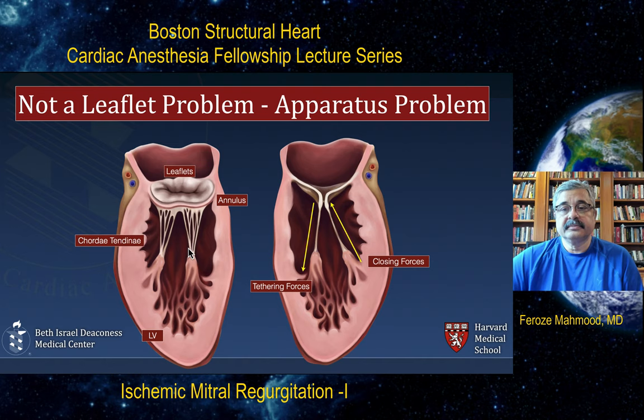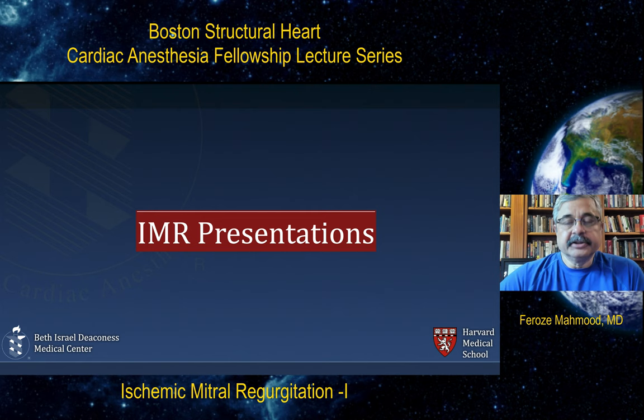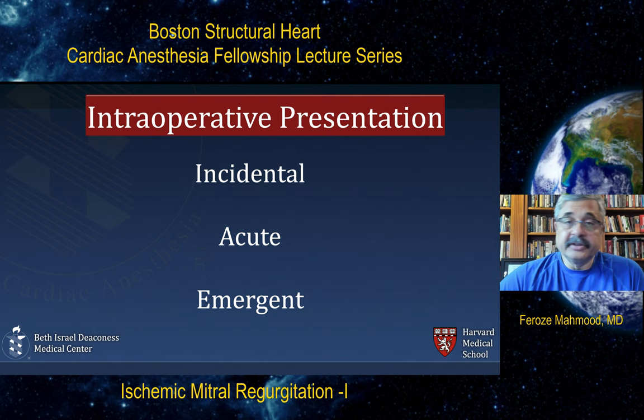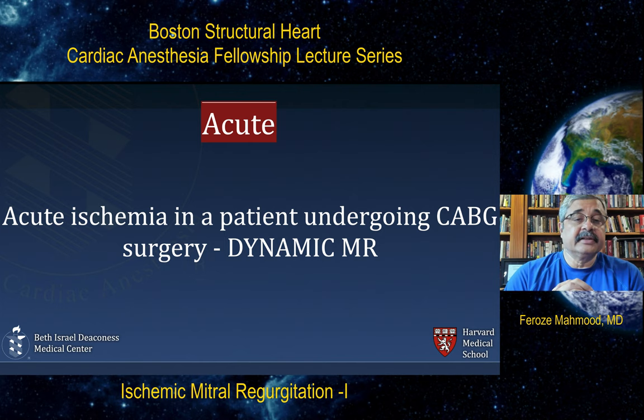Now let's go over the clinical presentations of ischemic mitral regurgitation. There are three broad categories in which we can encounter ischemic mitral regurgitation in the operating room: as an incidental finding, as an acute finding, or as an emergent presentation. Acute presentation is acute ischemia in a patient undergoing coronary artery bypass graft surgery — it's a dynamic MR which is responsive to ischemic therapy.